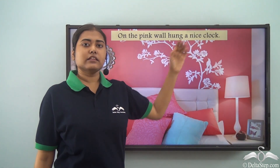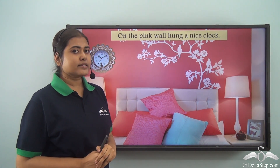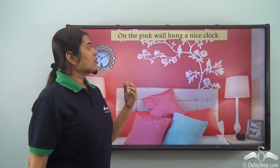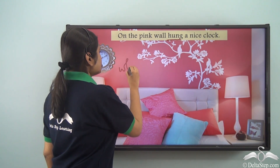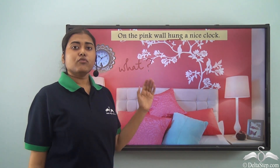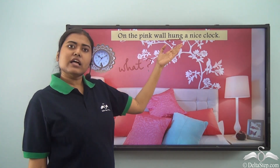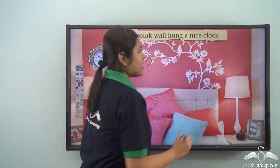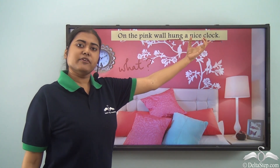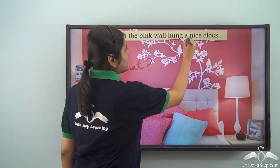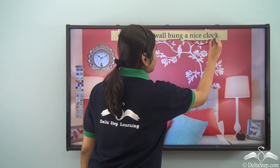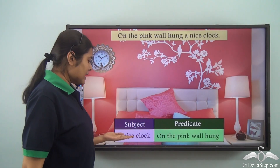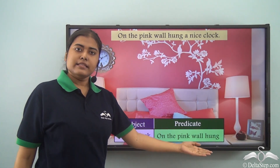Consider: 'On the pink wall hung a nice clock.' First find the verb: 'hung.' Then ask: what hung? Is it the pink wall? No. The answer is 'a nice clock.' So 'a nice clock' performs the verb 'hung' and becomes the subject. Here 'a' is the article and 'nice' is the adjective, both qualifying the noun 'clock.' So the complete subject is 'a nice clock,' and 'on the pink wall hung' becomes the predicate.